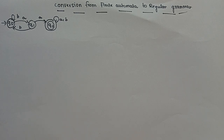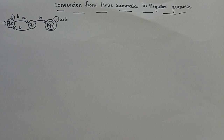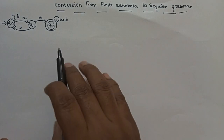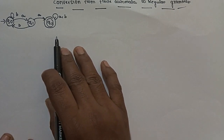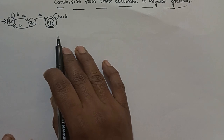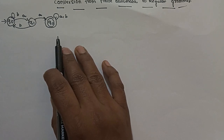We will talk about regular grammar. In this video, we will talk about a finite automata diagram, a set of production rules, and regular grammar. We will discuss the production rule and how to construct regular grammar from a finite automata.